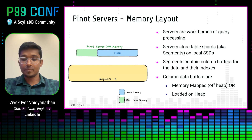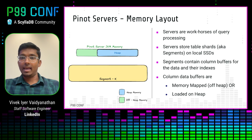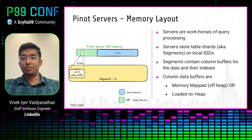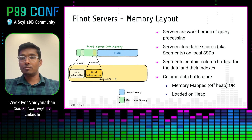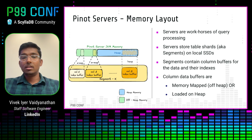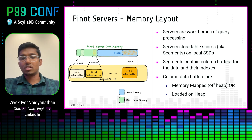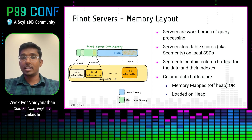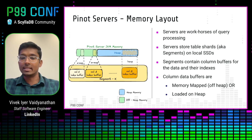The JVM memory is divided into two sections: heap memory and off-heap memory. Segment X contains two columns, column A and column Z. Column A has multiple column buffers — for instance, two index buffers configured to be memory-mapped. However, for column Z, we could configure it to load directly onto the heap. We do this when the cardinality is super low such that it fits in heap memory, and to satisfy low latency requirements.